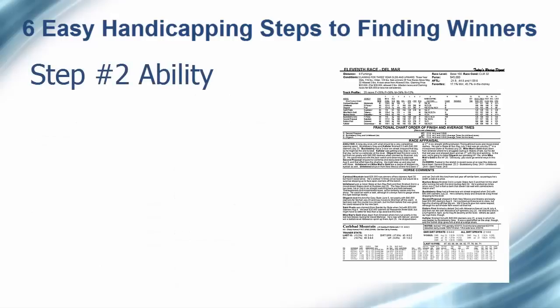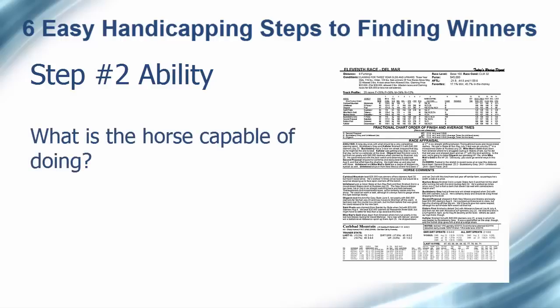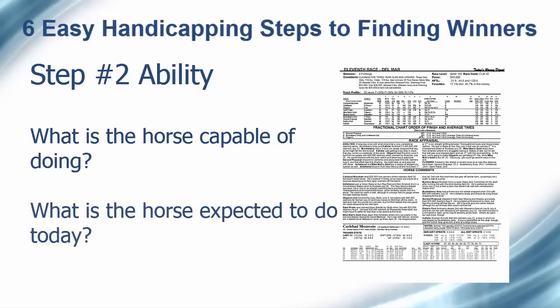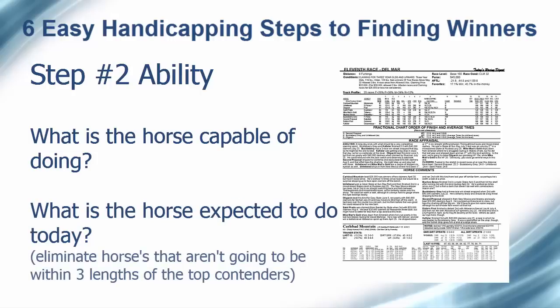How fast can the remaining horses in the field run on their best day? That's the next question to be answered. There are many different ways to evaluate talent in this era of speed figures and performance ratings. It doesn't really matter which ones you use, but you should be consistent. You will want to determine two things: what is the horse capable of doing, and more importantly, what does it figure to do today? Those horses that do not figure within three lengths of the top contenders in the race can be eliminated.